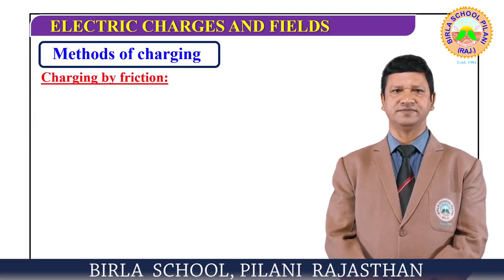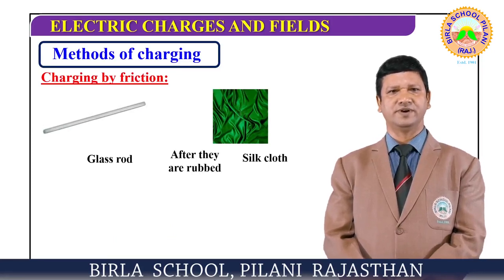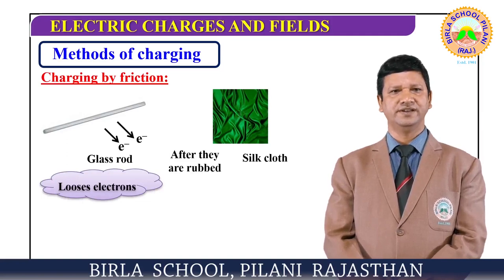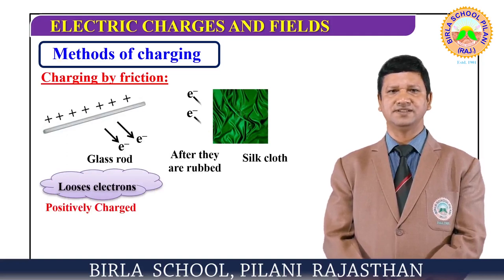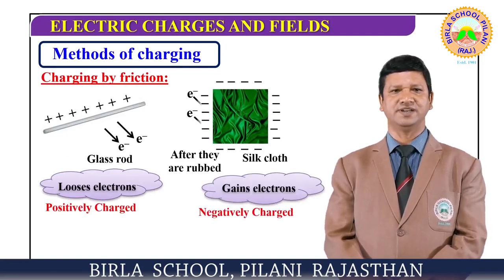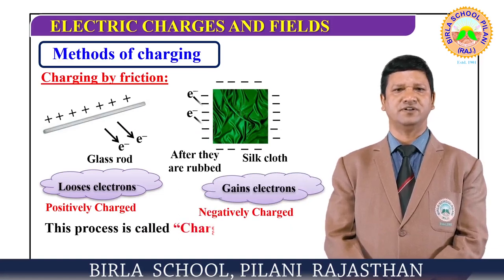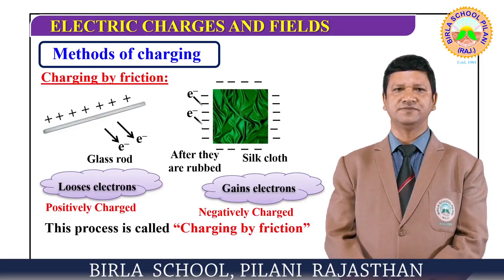In charging by friction, when a glass rod is rubbed with silk, the glass rod loses electrons and during this process it becomes positively charged, while the silk gains the electrons and becomes negatively charged. This process of charging is called charging by the method of friction.